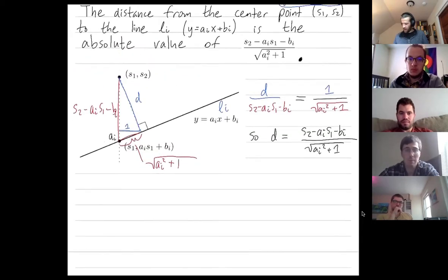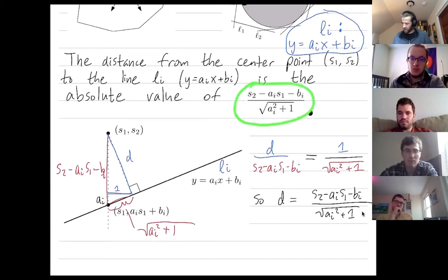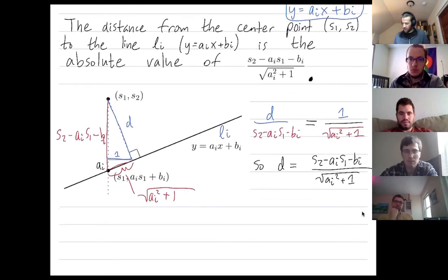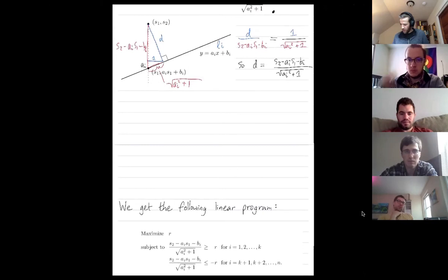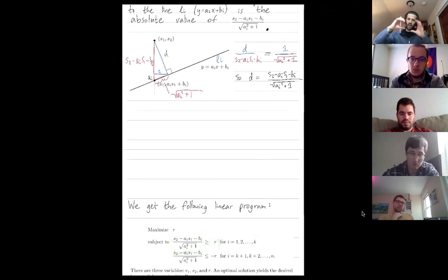So one other comment is that this distance more precisely is equal to the absolute value. And this expression right here is positive if the center point is above the line and negative if the center point is below the line. So we can now describe our linear program. We're going to maximize the radius of our ball. Subject to all the lines below, the radius of the ball can't exceed the distance to the line. Otherwise, our ball would pop outside of the polygon.